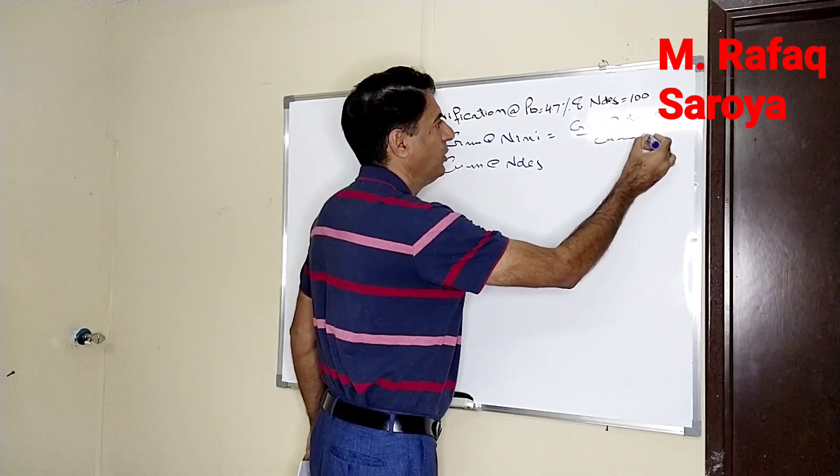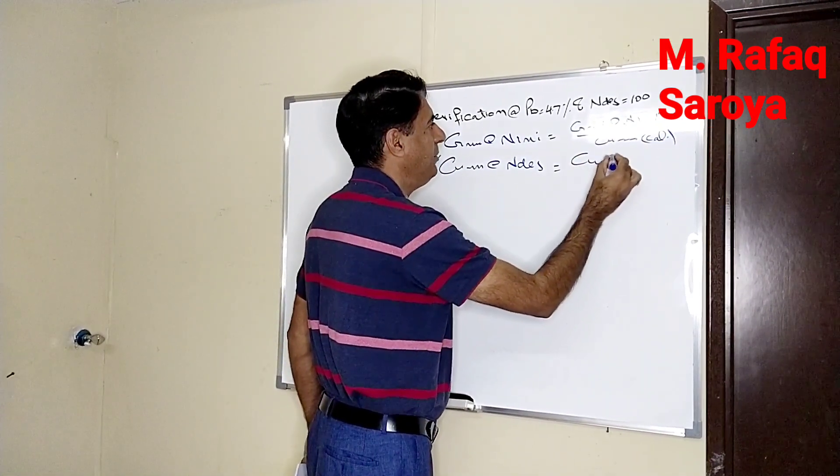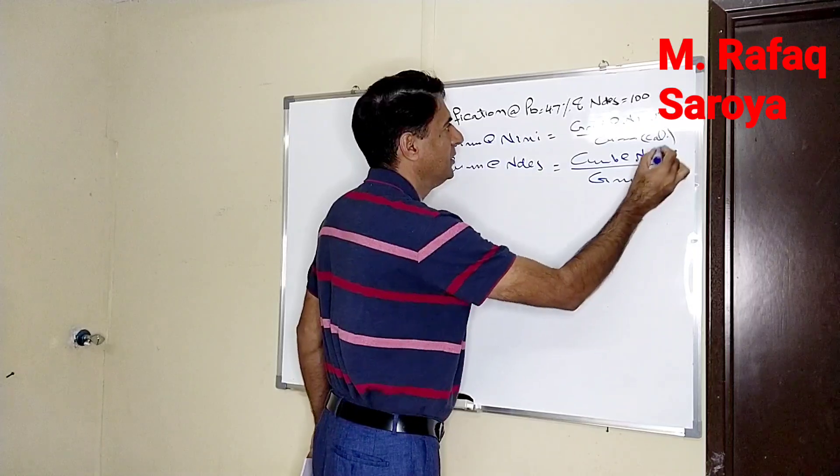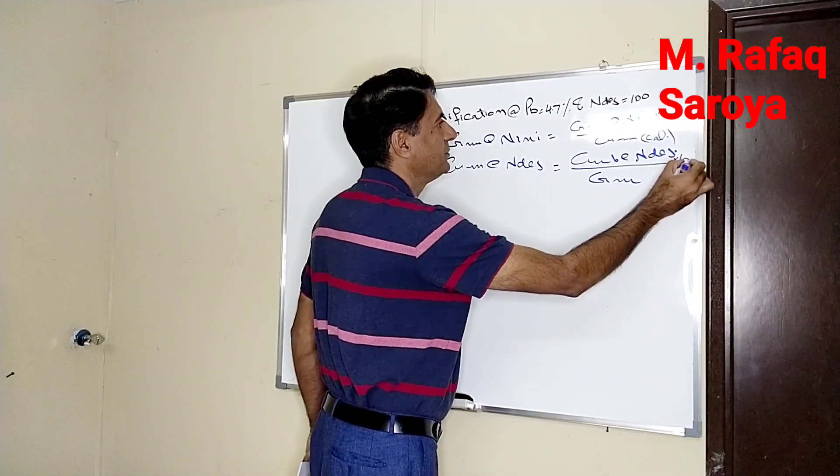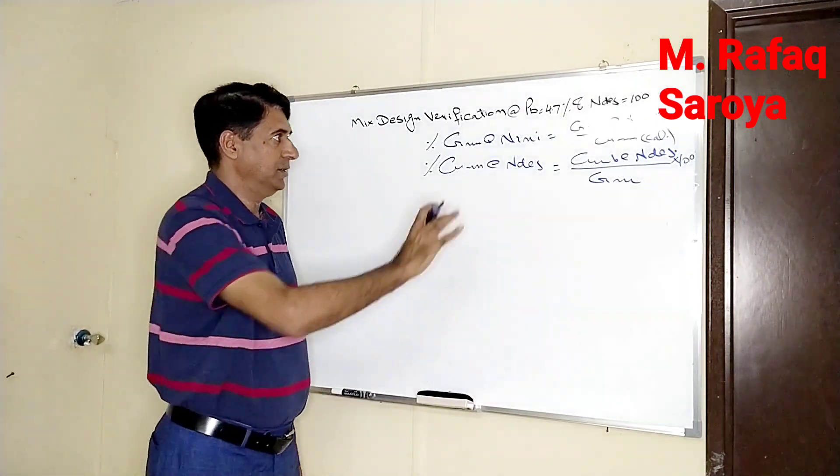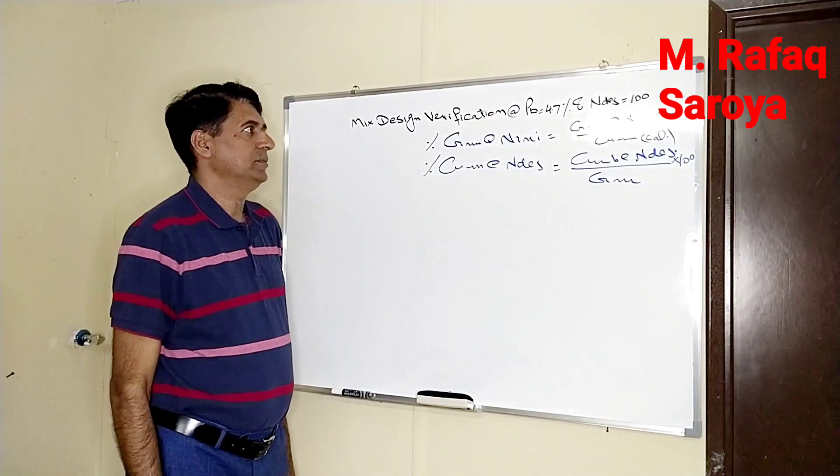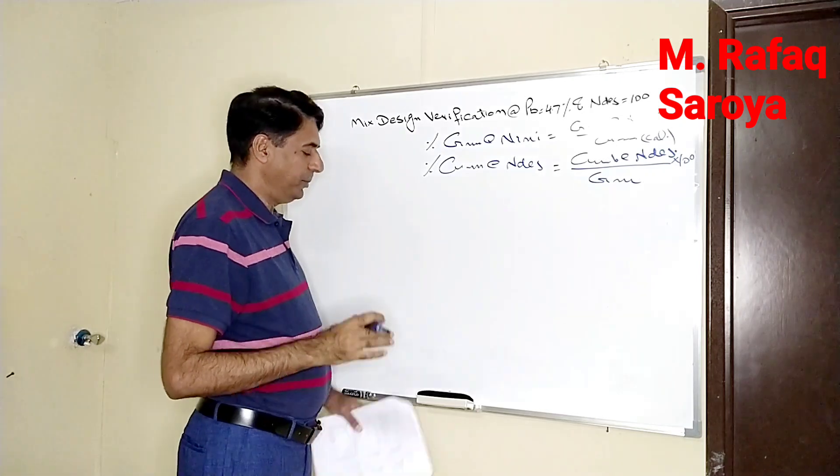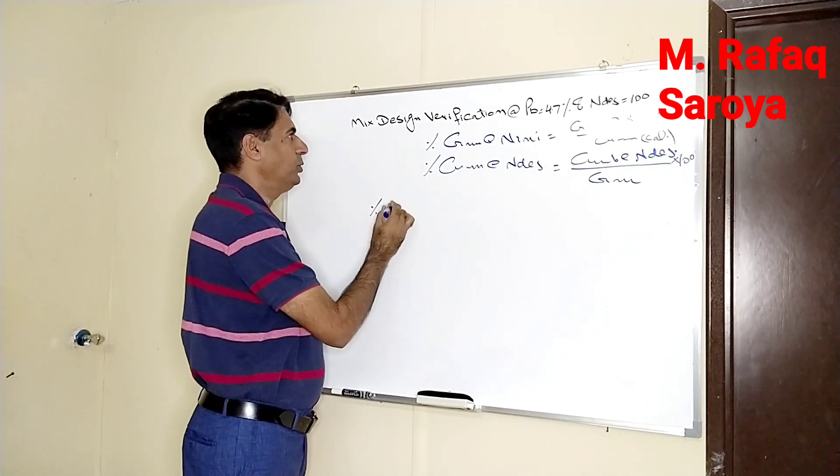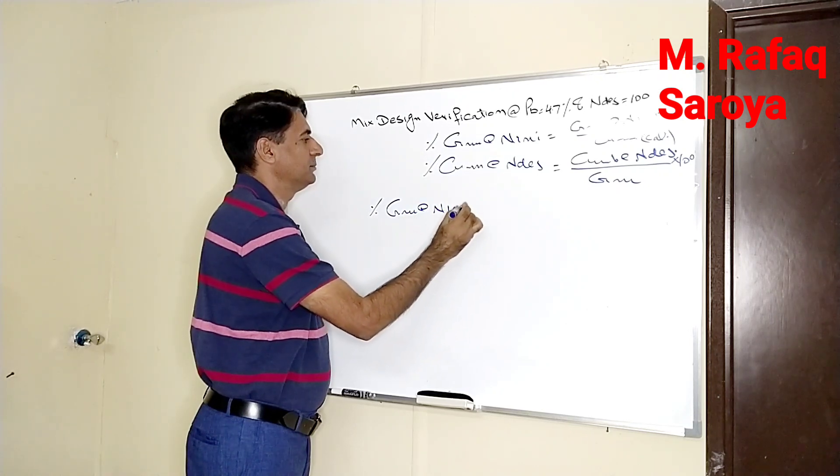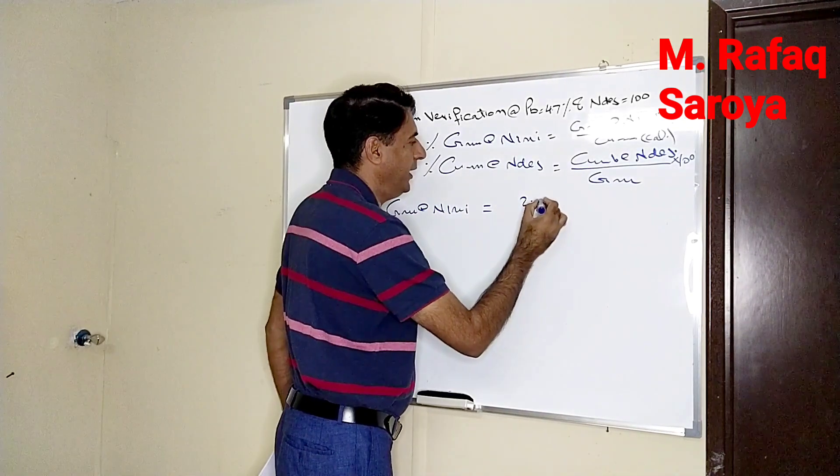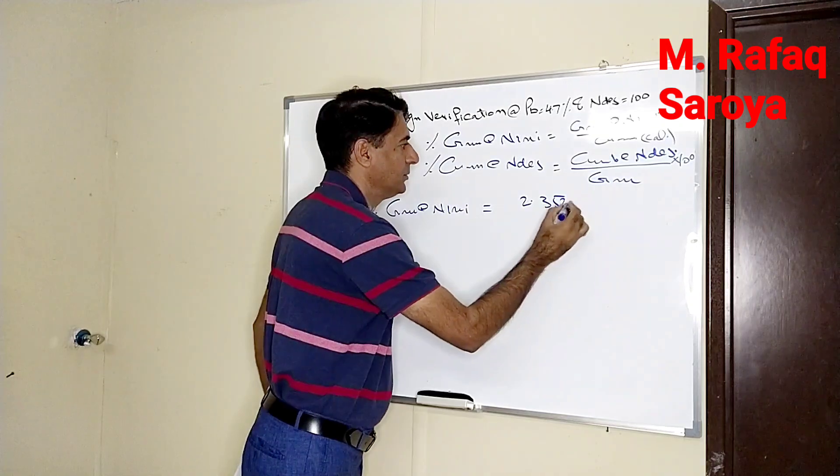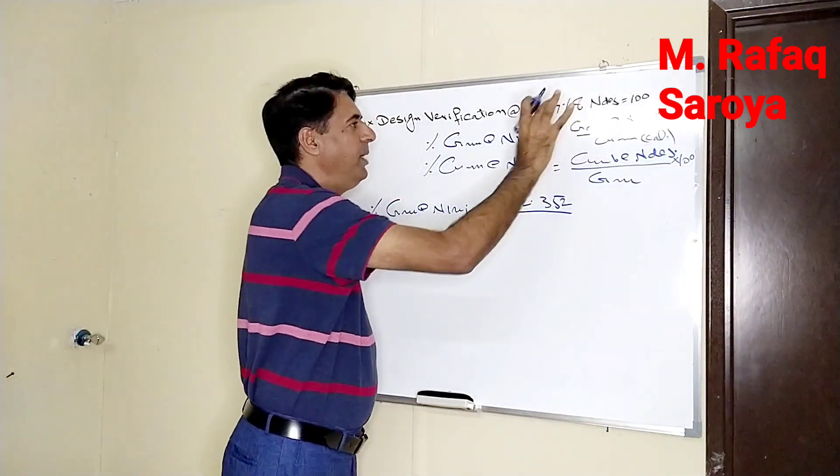Similarly, GMB at the rate of n dash divided by GMM into 100. These are the two equations which we have to discuss now. This GMM at the n initial we have already calculated in our previous video and its value is equal to 2.352.